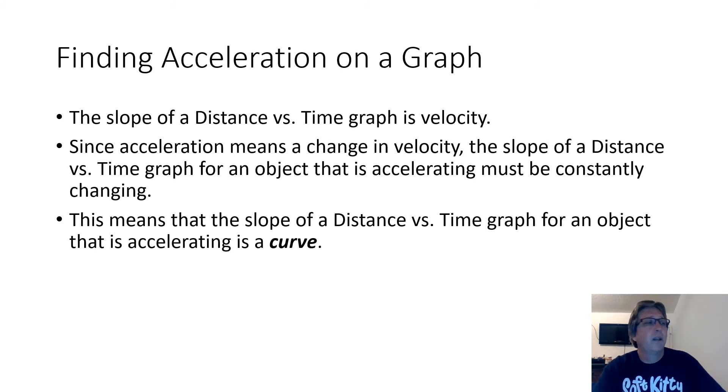Now we can also talk about acceleration on motion graphs. And we're going to start off talking about the same kinds of graphs we talked about last week. Last week, we talked about distance time graphs or position time graphs. And we learned that the slope of those graphs was velocity. Well, we've also just learned that acceleration is a change in velocity. So if we have a slope of a distance versus time graph for an object that's accelerating, that means the slope is constantly changing. And a constantly changing slope is a curve. This means the slope of a distance versus time graph for an object that's accelerating is not a straight line, but a curve.